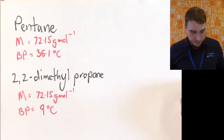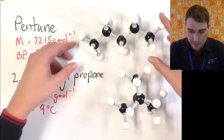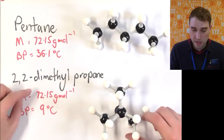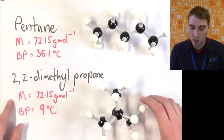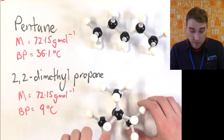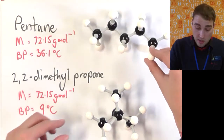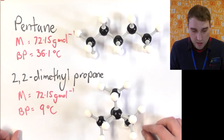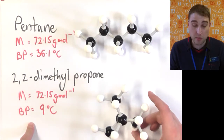Another thing is shape. I've got two molecules here: pentane and 2,2-dimethylpropane. If you look at them, you'll notice something — they both have the same molar mass, because they're both made up of the same number of carbon atoms and hydrogen atoms: 5 carbons and 12 hydrogens. But they have a very different boiling point. The boiling point of pentane is 36.1°C, whereas the boiling point of 2,2-dimethylpropane is 9°C.